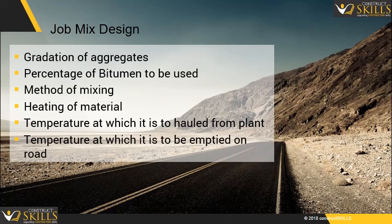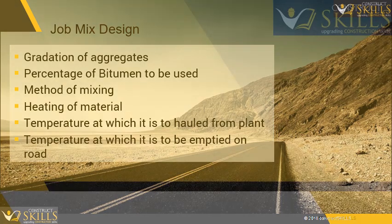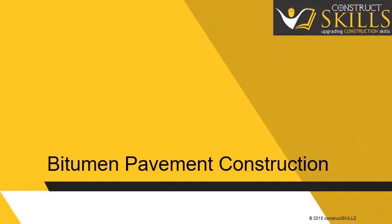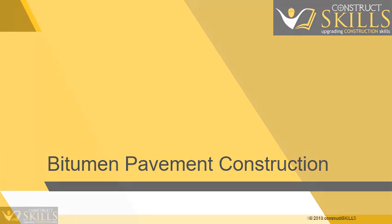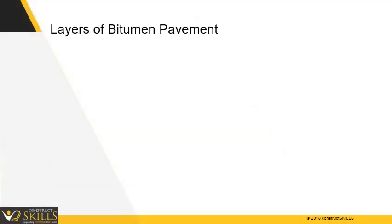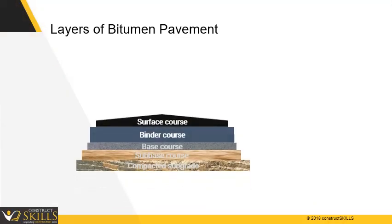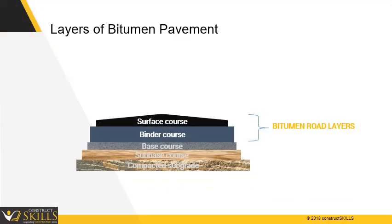Construction of Bituminous Pavement. The sketch shows various layers of a bitumen road. As per the sequence of construction, the layers are: prime coat, binder course, tack coat, surface course, and seal coat.